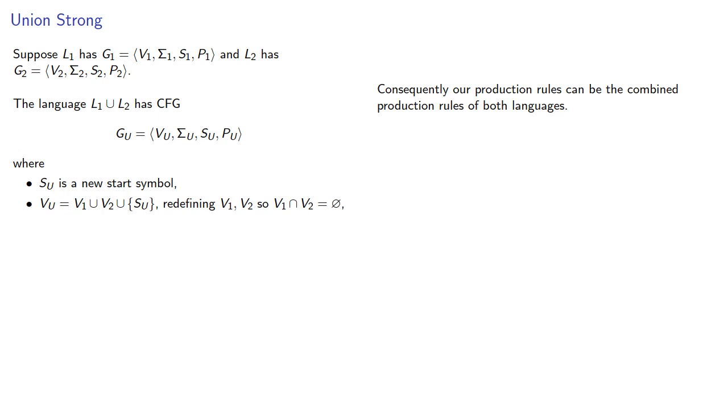Consequently, our production rule can be the combined production rules again after relabeling the variables. But wait, there's more. We also need to introduce a rule that puts us in one of our two languages. Essentially, given a string, we have to know which language it's from. And so we can do this with the rule SU produces either the start symbol of S1 or the start symbol of S2.